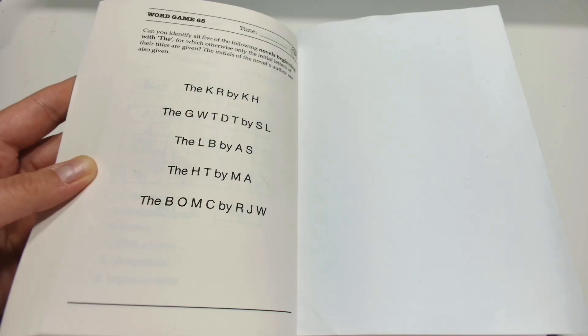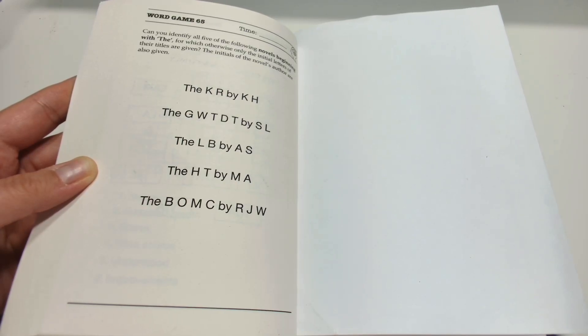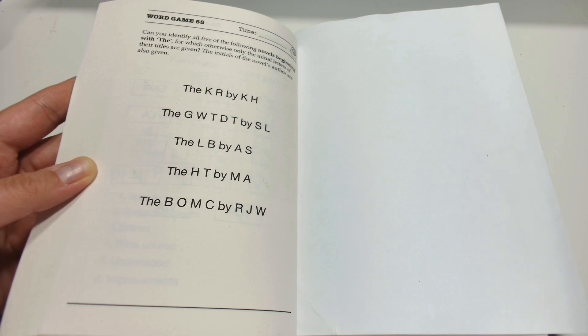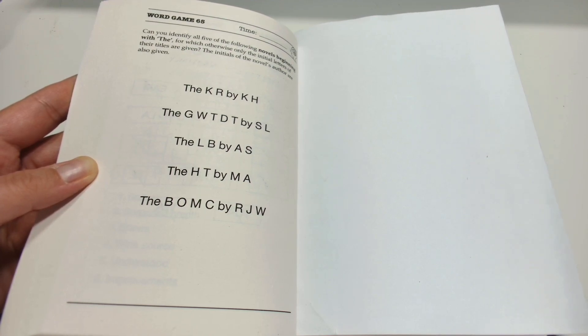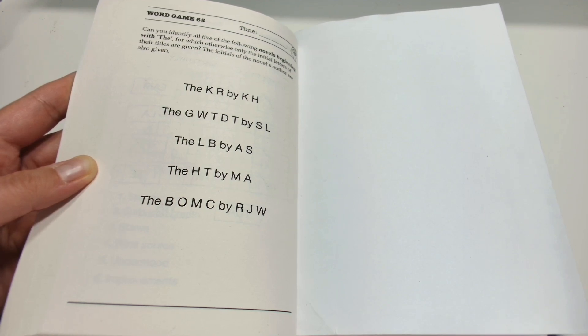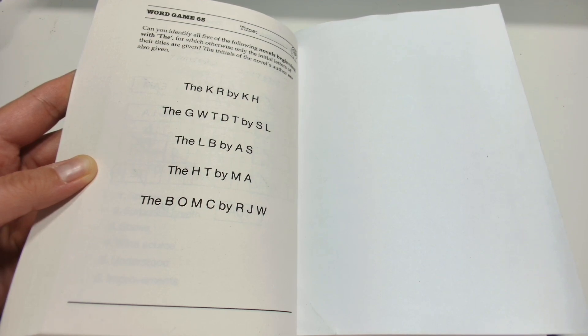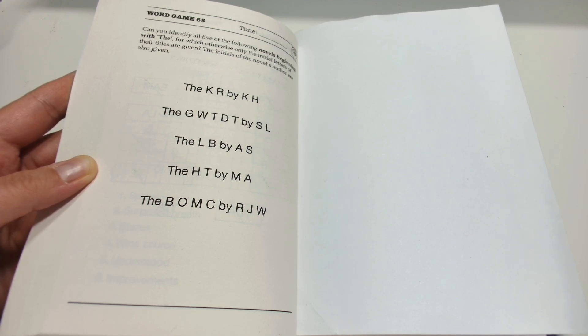Welcome to Word Games Brain Your Day. Today, can you identify all five of the following novel beginnings for which only the initial letters of their titles are given? The initials of the novels' authors are also given. Stop the video now, try to find the names, and then we will see them together.